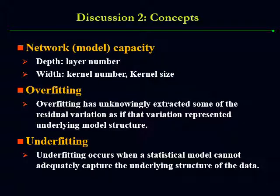These slides provide some discussion on the concepts of learning reconstruction. Model capacity normally represents the capability of a neural network in representing a nonlinear relationship. The model capacity is normally proportional to its network size — the deeper and the wider, the larger the model capacity. We also need to understand the concepts of overfitting and underfitting. Overfitting tends to extract some of the random variations as model structure, while underfitting cannot adequately capture the underlying structure of the data.